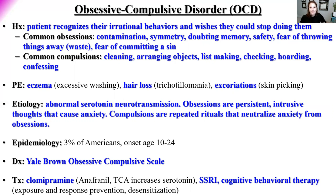SSRIs — selective serotonin reuptake inhibitors like Zoloft and Prozac — are first-line for many disorders in this unit. Cognitive behavioral therapy involves exposing patients to the anxiety-provoking stimulus and teaching them to respond correctly. Desensitization exposes them to smaller then progressively larger amounts until their brain becomes comfortable with that situation.